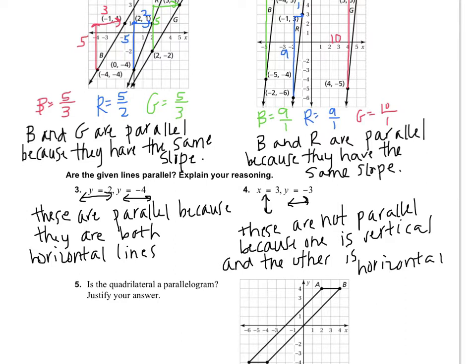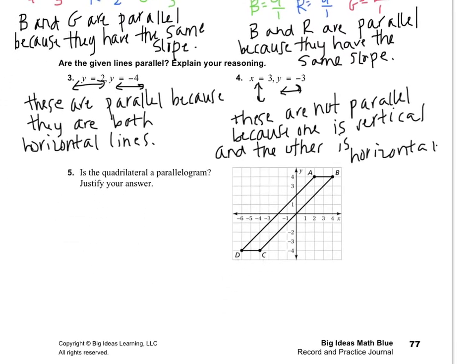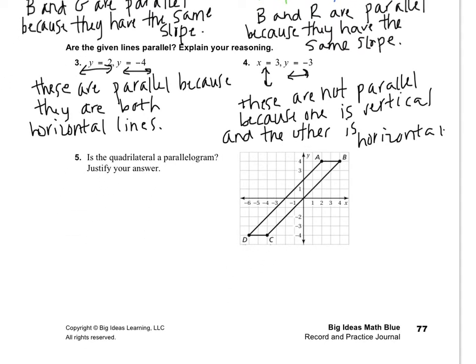Obviously a horizontal and a vertical can't be parallel. Number five: in order to be a parallelogram, you have to have opposite sides parallel. That's a vocabulary definition from your younger grades. We can't just say it looks like four sides — we need to know if the opposite sides are parallel, and the way we know is if they have the same slope.